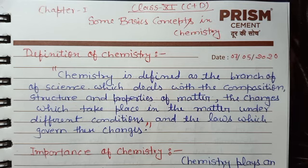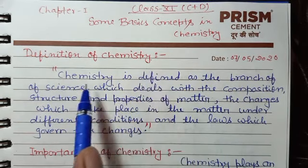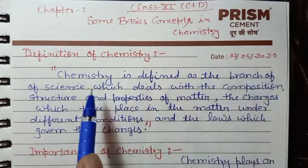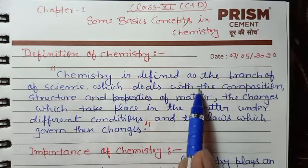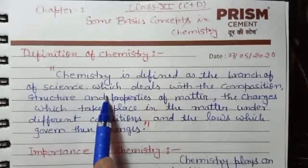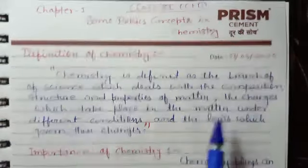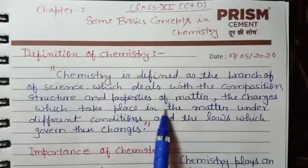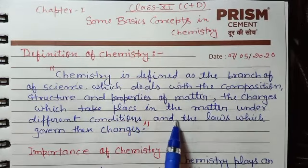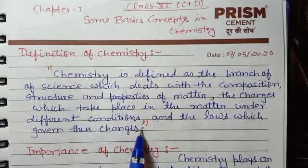First of all, the definition of chemistry. Chemistry is defined as the branch of science which deals with the composition, structure, and properties of matter, the changes which take place in the matter under different conditions, and the laws which govern these changes.